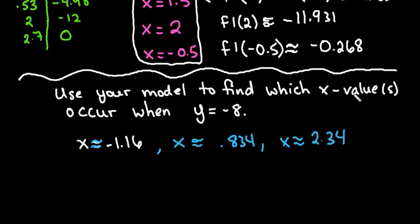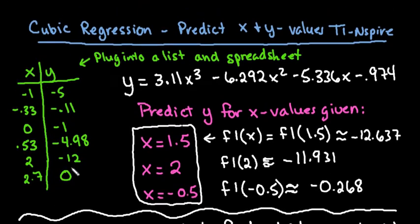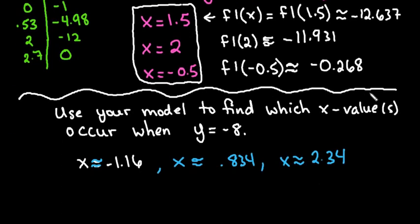To recap: first, enter all your values into x and y lists; look at the scatter plot to see what kind of model to use; come up with your equation in the calculator screen; then plug in x values using f1(x) to predict y; and use the graphing screen to find x values for a given y coordinate. As always, thanks for watching — if you have any questions or need additional topics covered, please let me know.